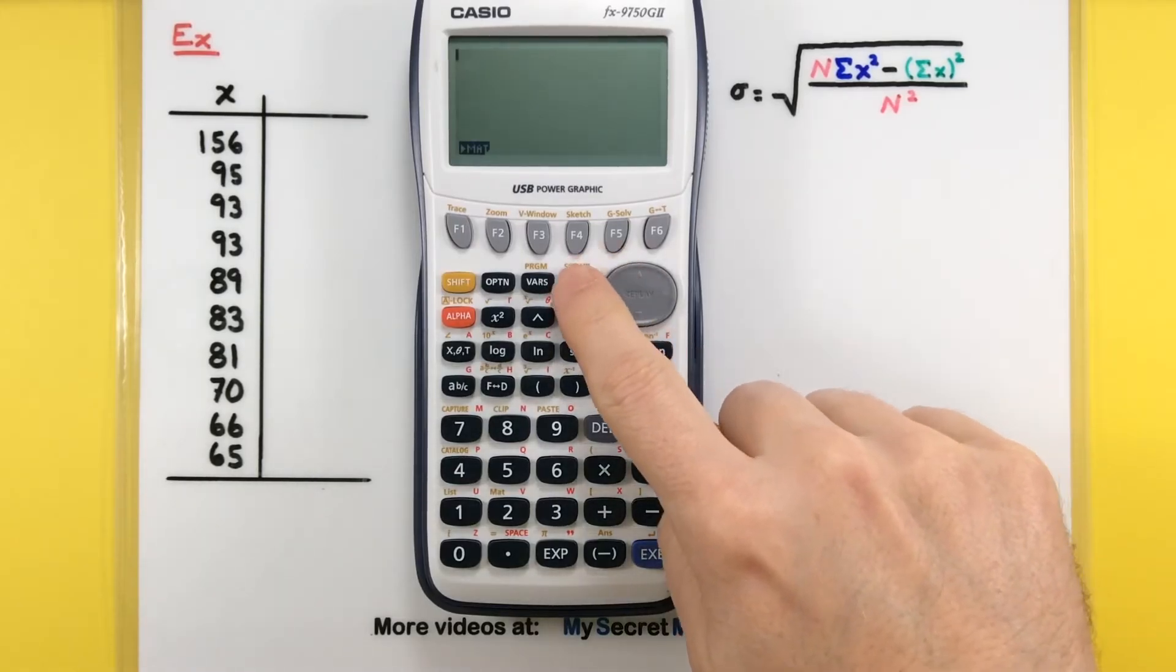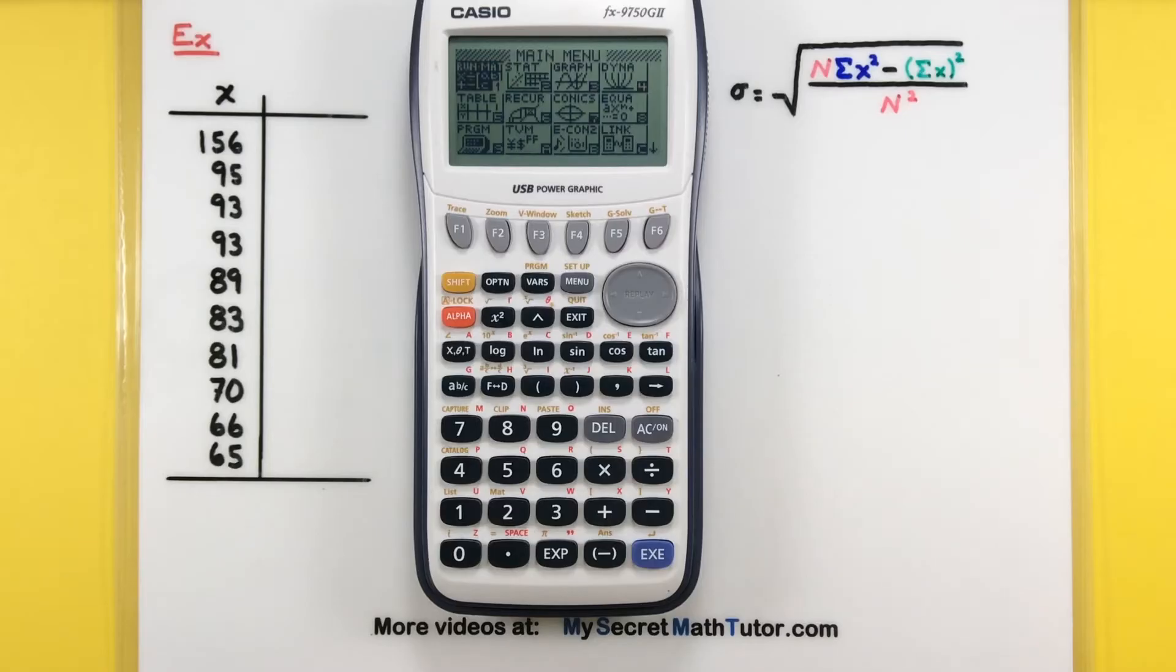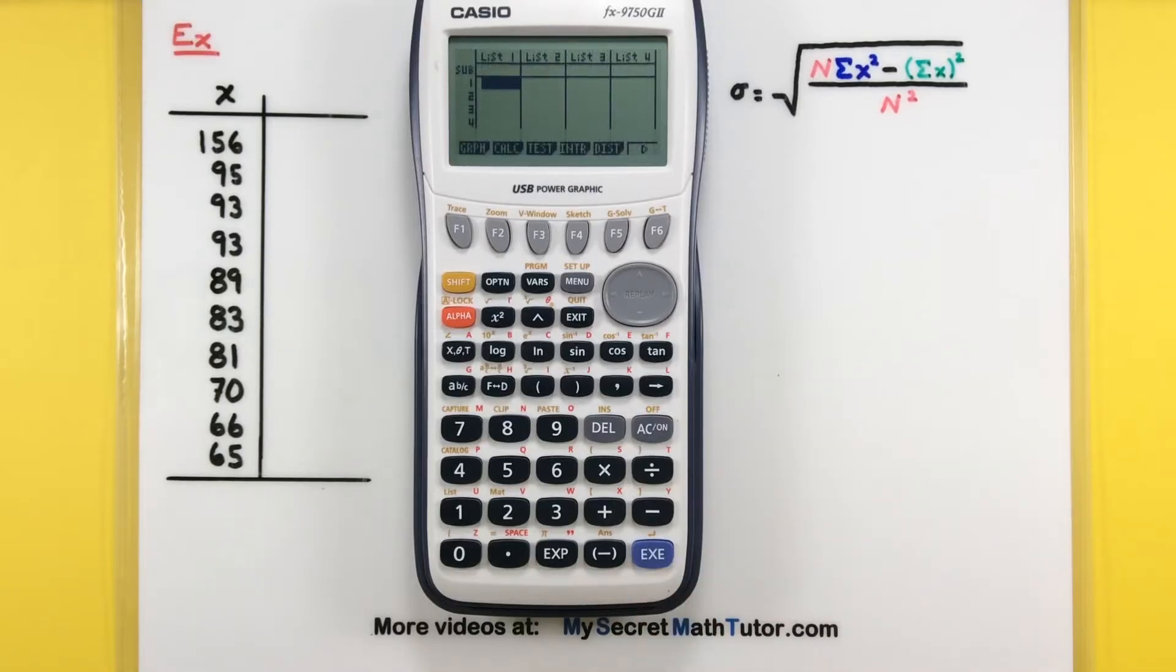Press the menu button, and you'll see all your different menus. Notice the second one says stat—select that one. Press execute, and here we have the lists where we can store our data.